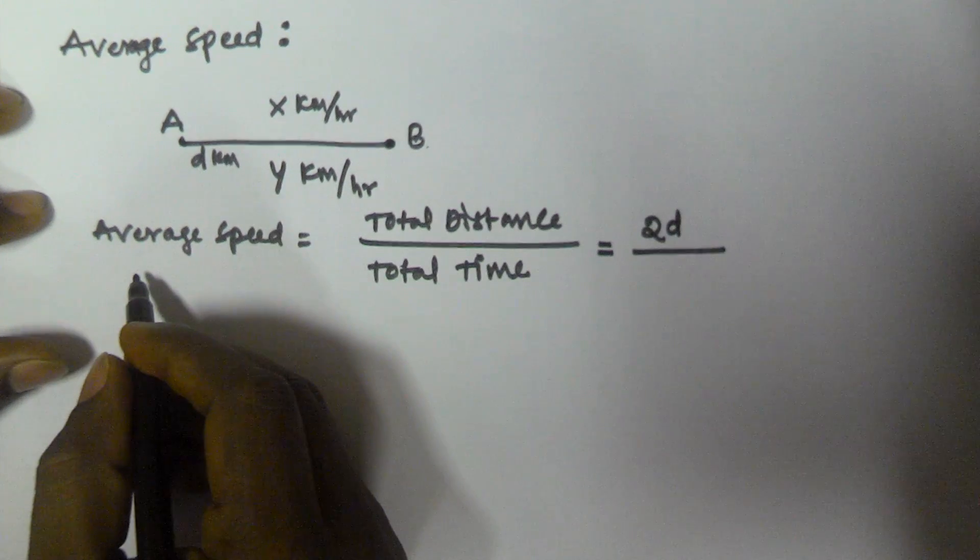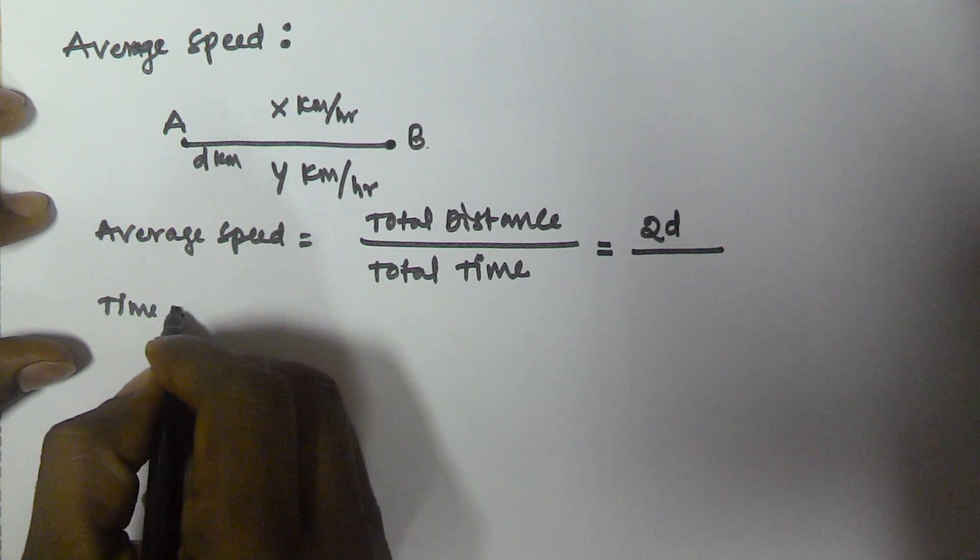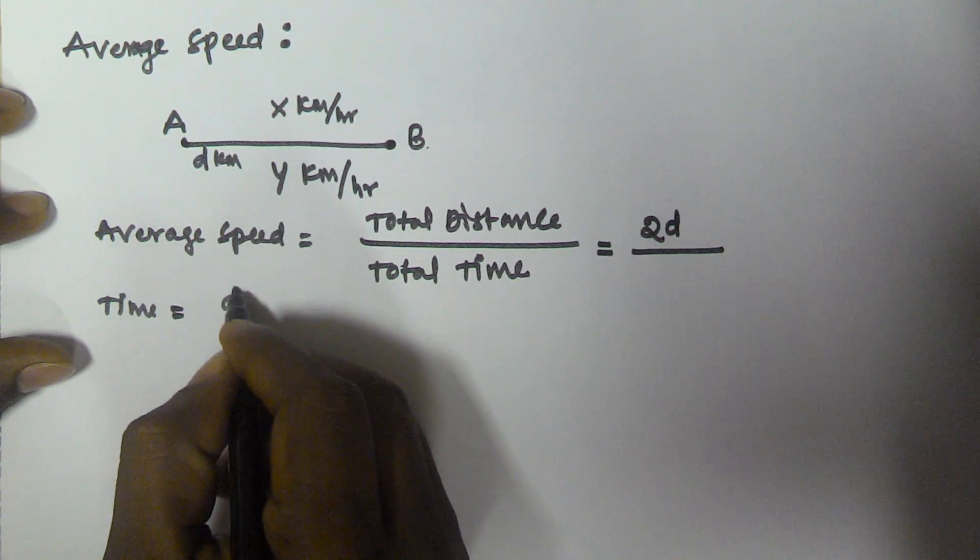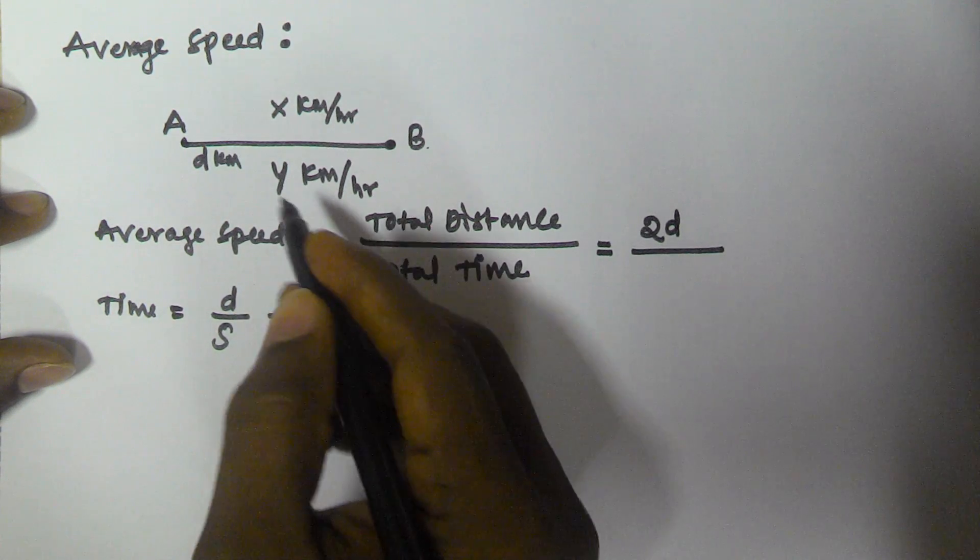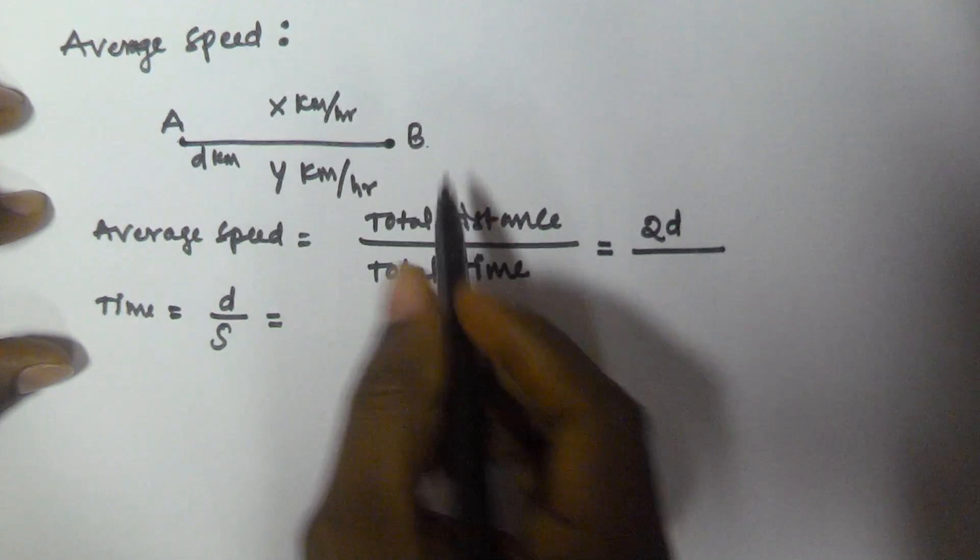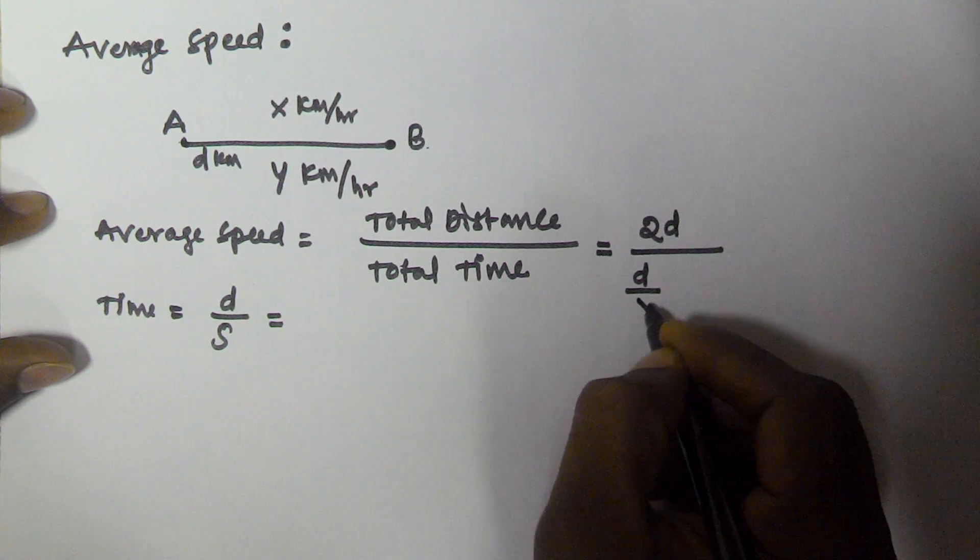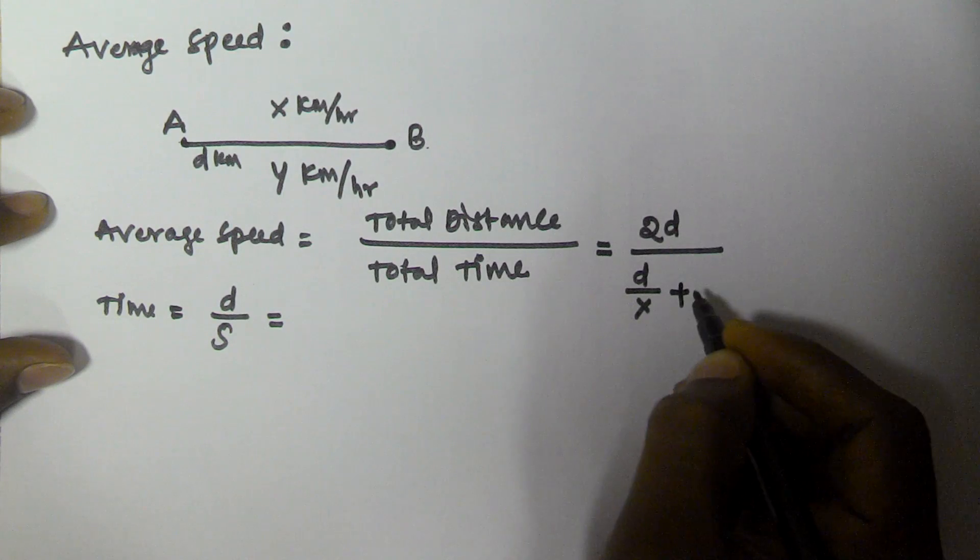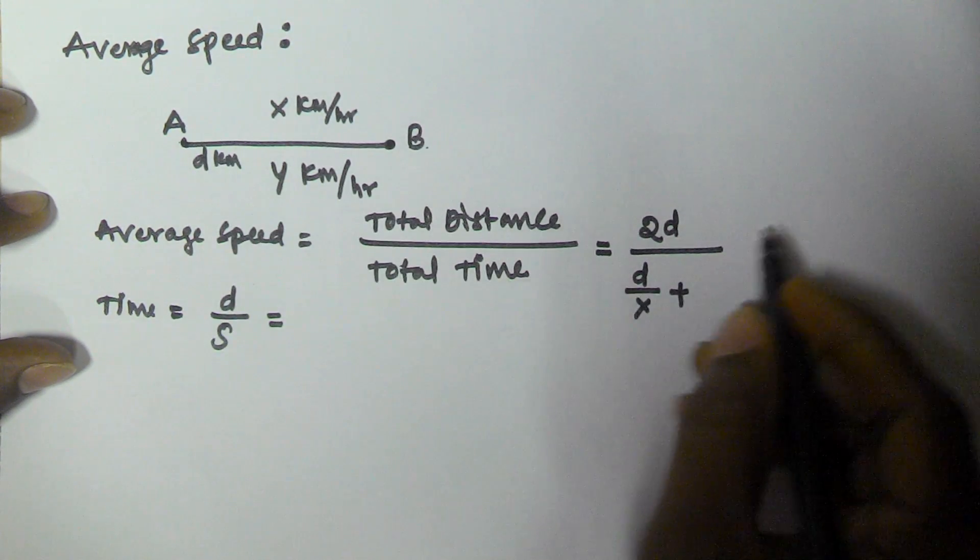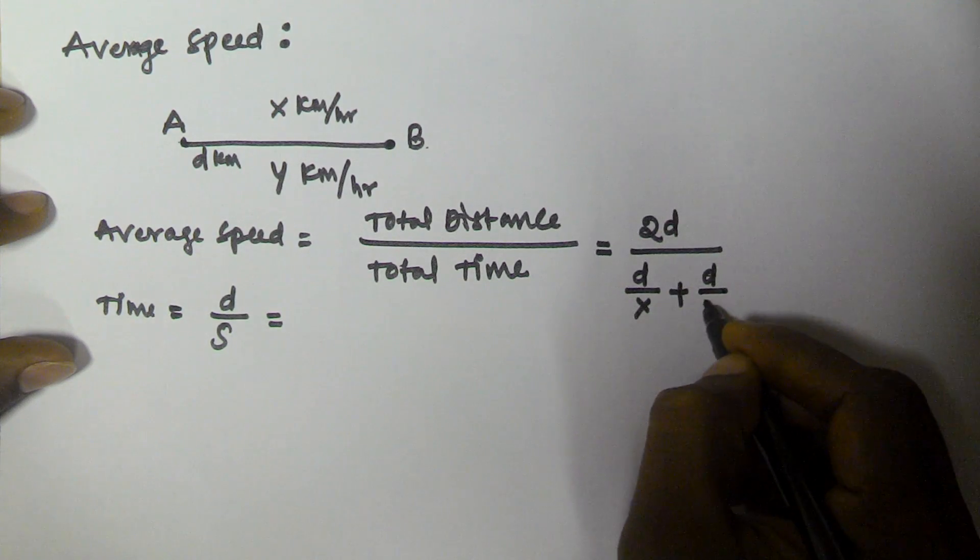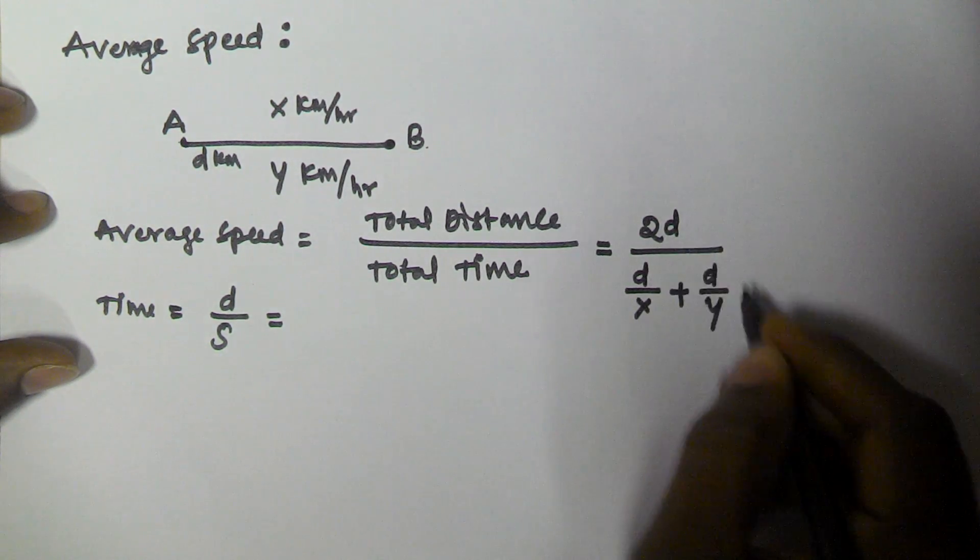So the time is equal to distance by speed. For travelling from A to B the time taken is the distance d and the speed is x km per hour plus the time taken from travelling from B to A, that is distance d by y. So this will give the total time taken. Now let us solve this question.